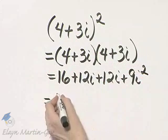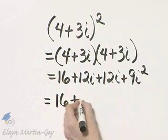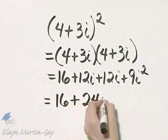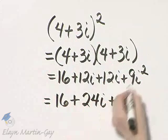Let's write down what we have. We have 16 plus 12i plus 12i, that's 24i plus 9.